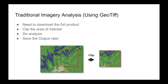Traditionally, what we need to do is download the full product of a GeoTIFF image, clip our area of interest, do analysis, and save the output raster. I have done this in the past using USGS imagery — I used to download the imagery from USGS and then manually clip my area of interest and do the analysis.